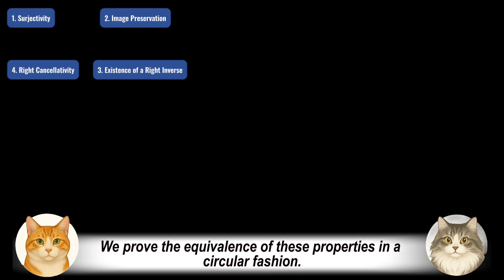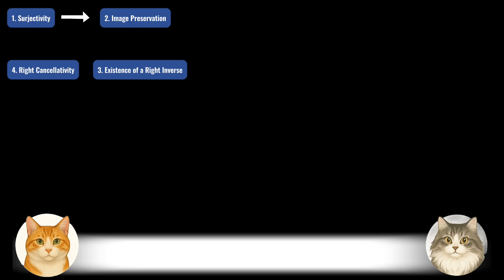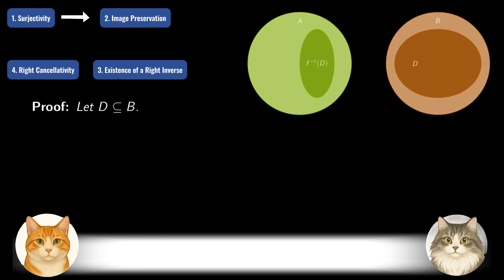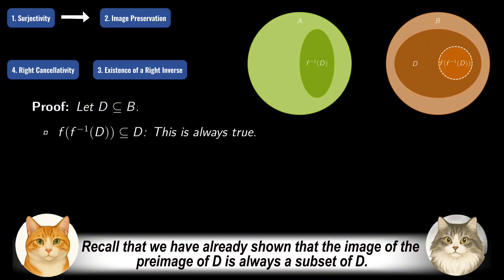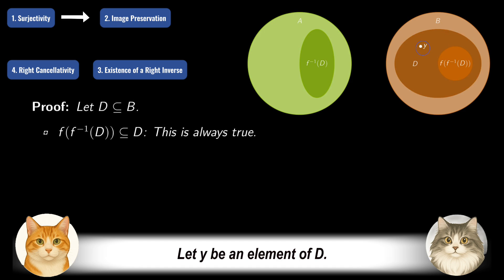We prove the equivalence of these properties in a circular fashion. Starting by assuming that the function is surjective, we aim to prove image preservation. To this end, let D be an arbitrary subset of the codomain B. Recall that we have already shown that the image of the preimage of D is always a subset of D, so we only need to prove the reverse inclusion.